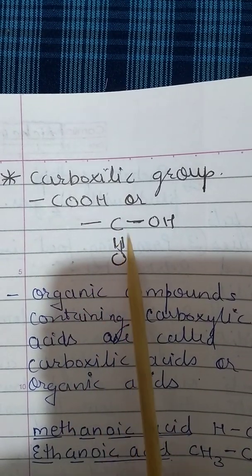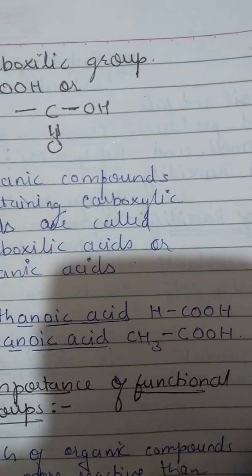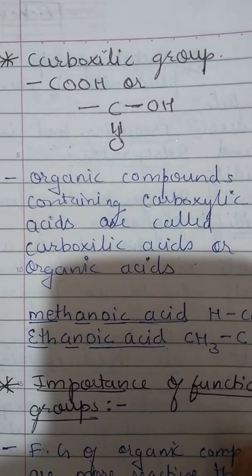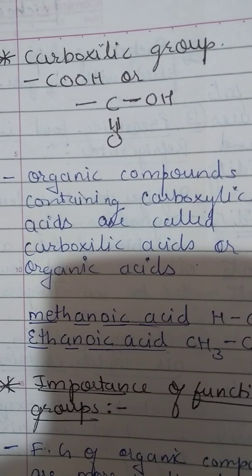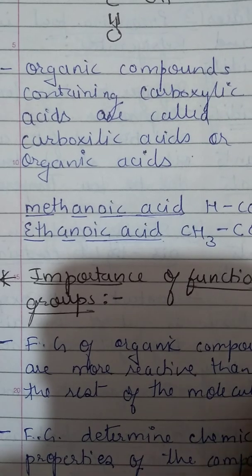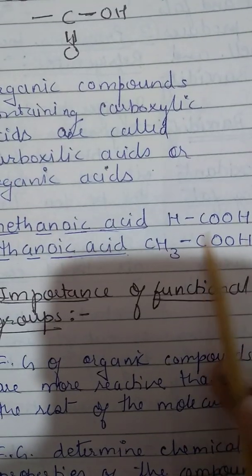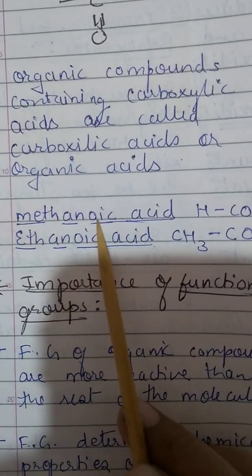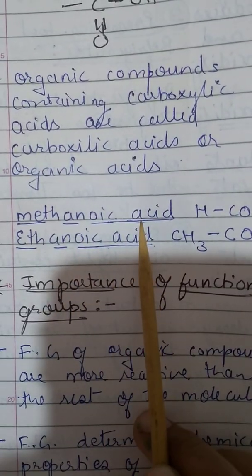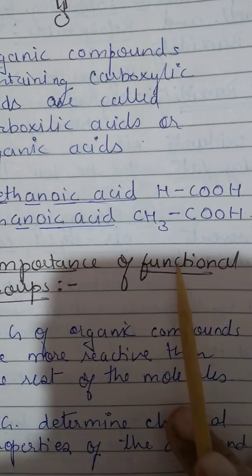The last one is the carboxylic group. The carboxylic group is written as –COOH. The structure is C double-bonded to O and single-bonded to OH. Organic compounds containing carboxylic groups are called carboxylic acids or organic acids. They are mild acids, not strong acids. When naming, you add 'oic acid' at the end — for example, methanoic acid (HCOOH with one carbon) and ethanoic acid (CH₃COOH with two carbons).